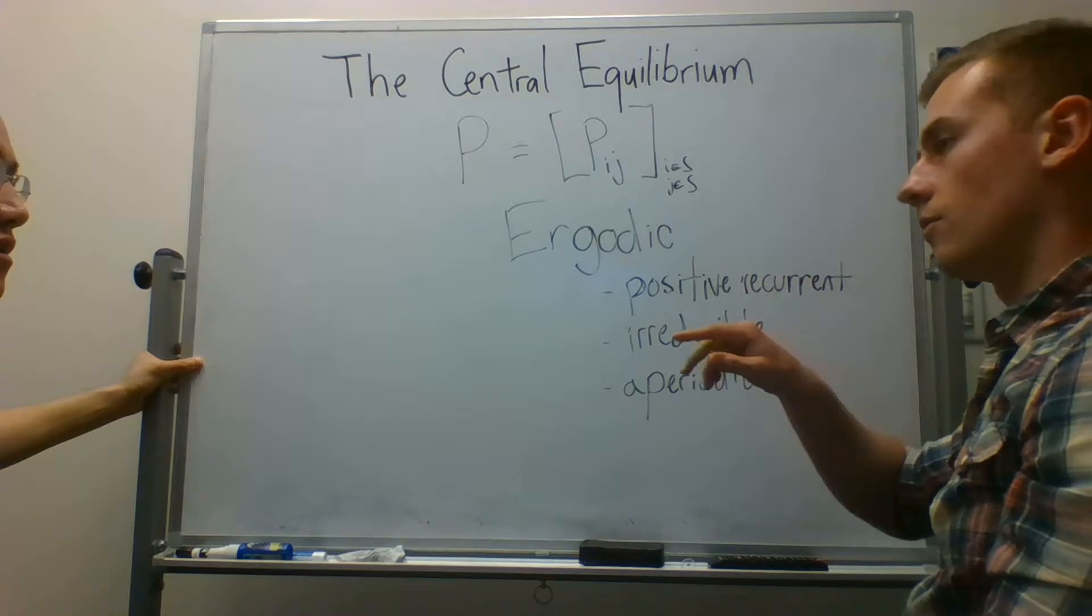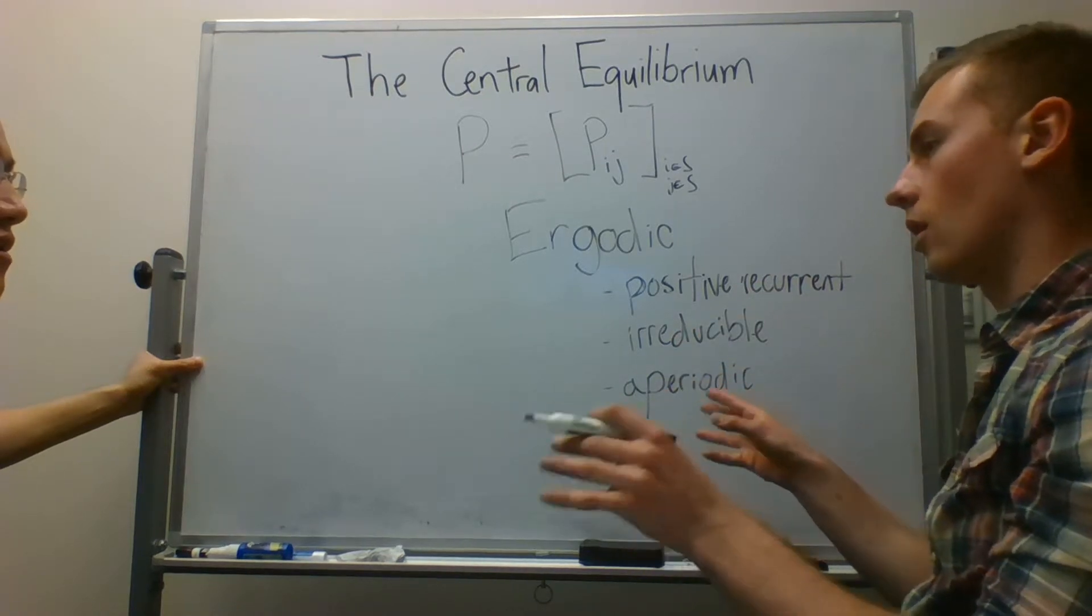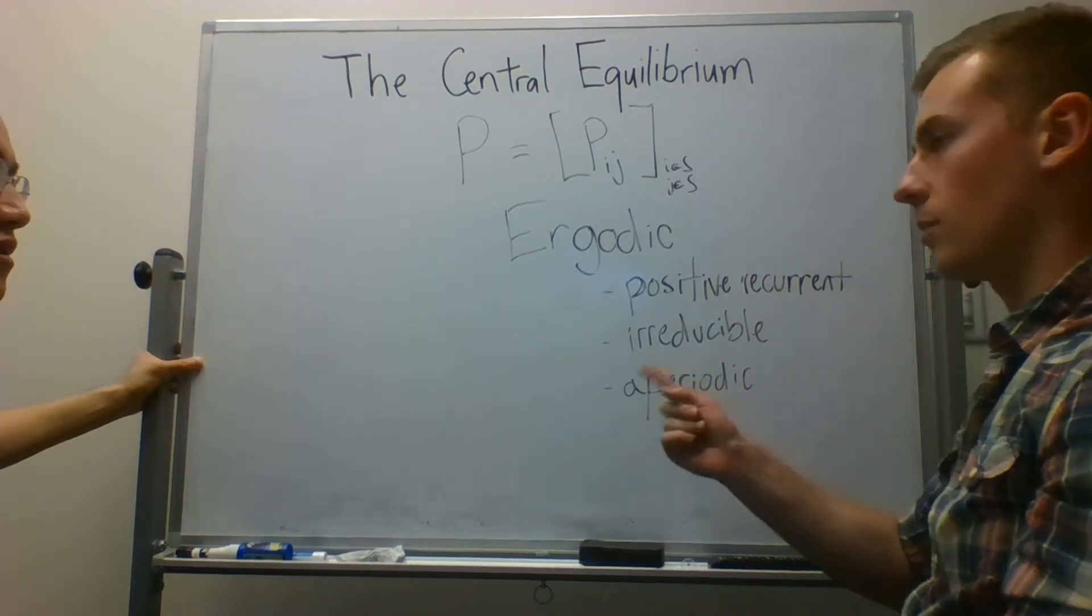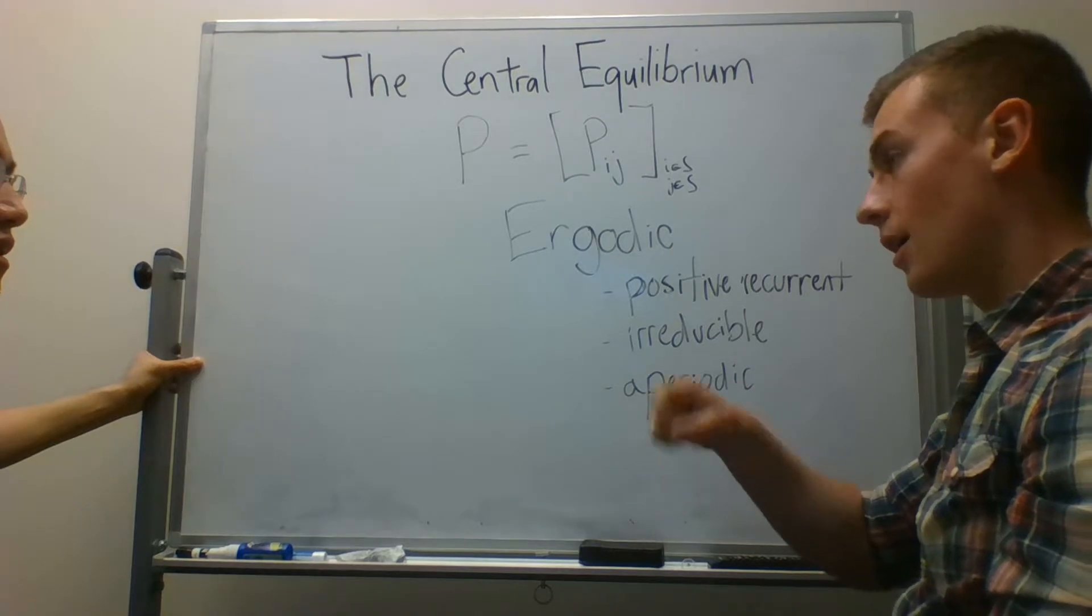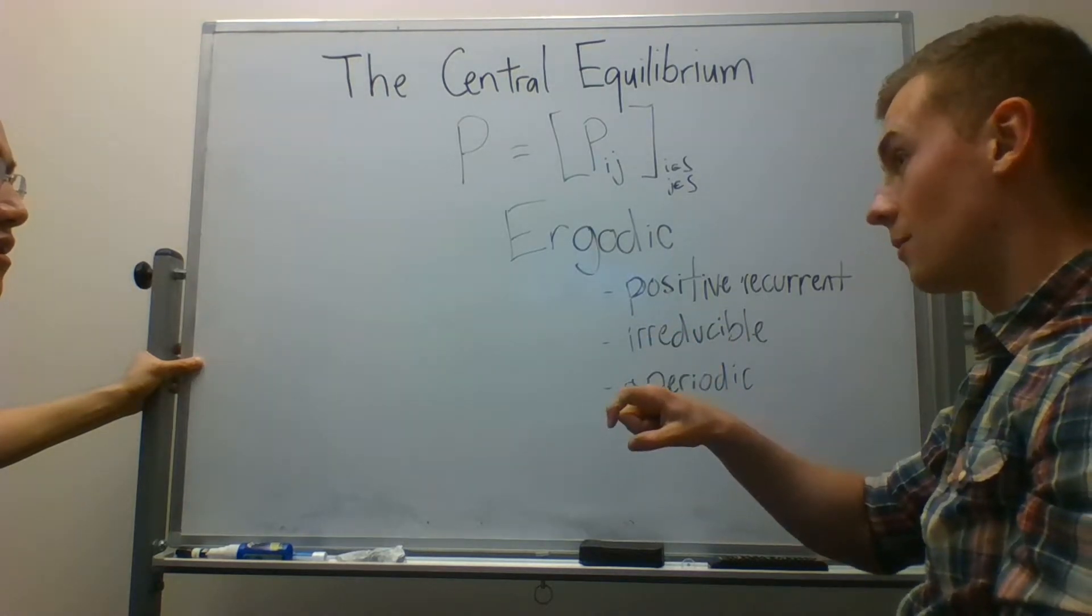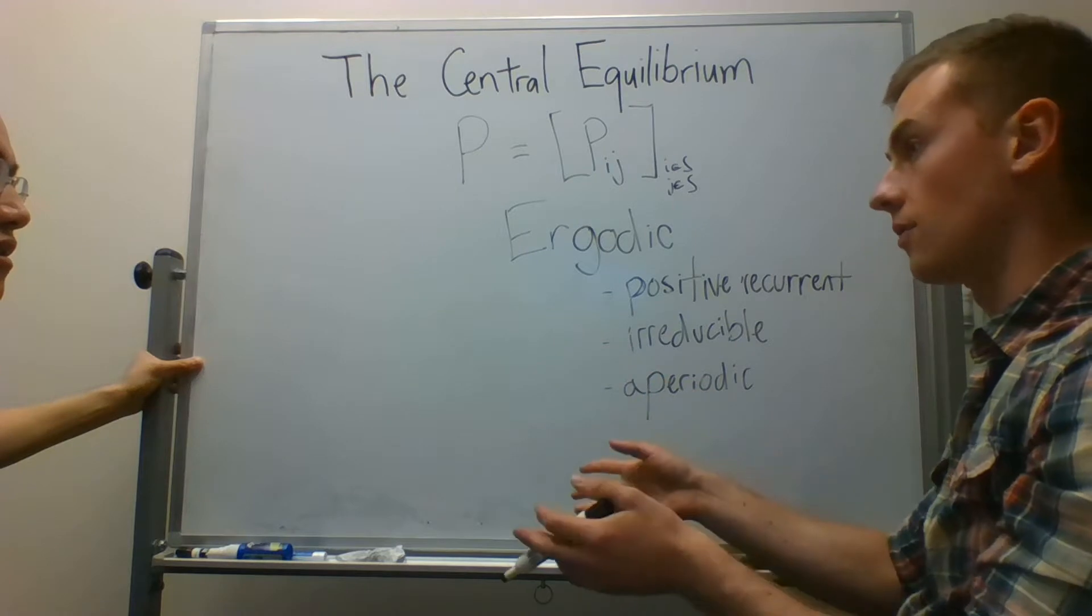You can actually think of countably infinite Markov chains where there's a positive probability of returning to a state, but the expected time between state visits of that state is infinite.